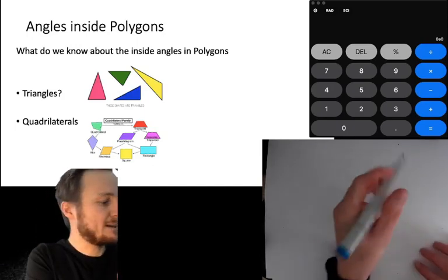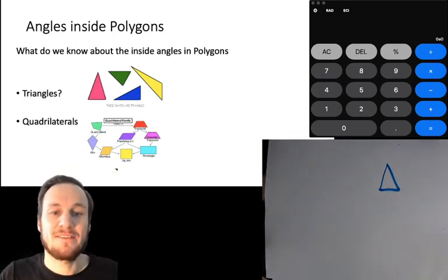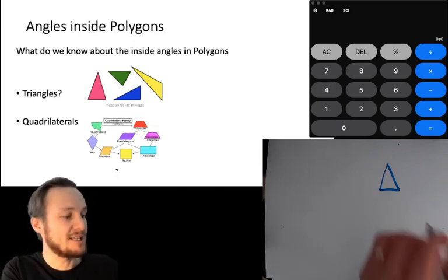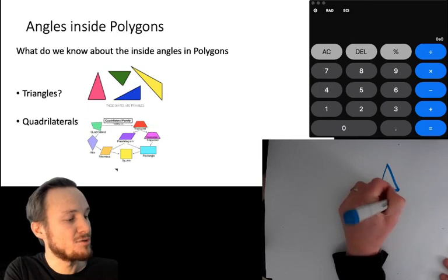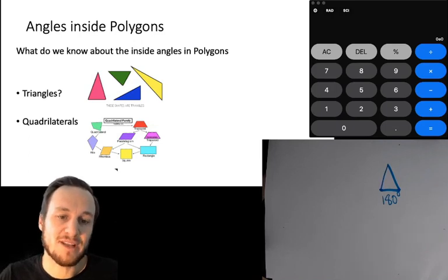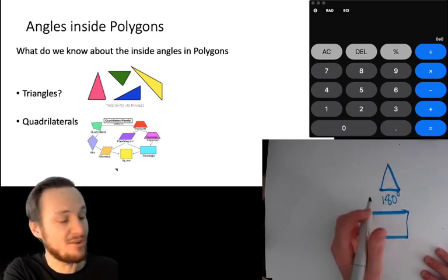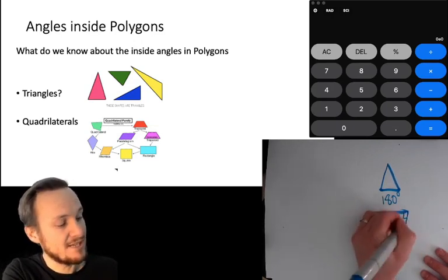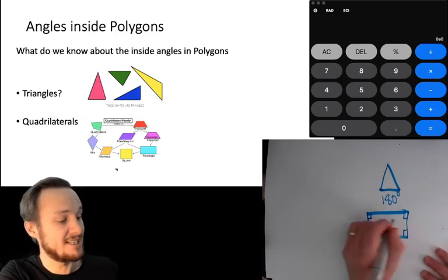Let's think about the angles inside polygons that we already know. Let's pick a triangle. Now, in what we did last term, you would know that all triangles, all the angles within a triangle, it doesn't matter what sort of triangle, always add up to 180 degrees. And we also learned about squares and quadrilaterals that all four-sided shapes, if you count all of the angles in all four-sided shapes, they always add up to 360 degrees.